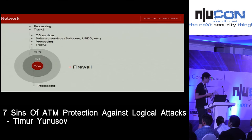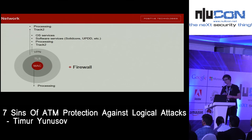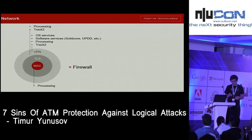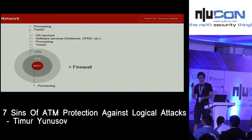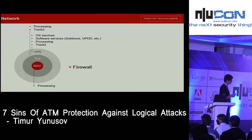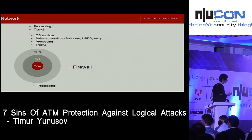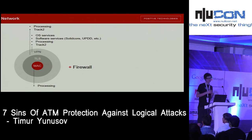About the network: there are many protection mechanisms for ATM communication. First, of course, is VPN — software or hardware — which protects your OS services, incoming and outgoing requests, other software services, processing interaction, and customer track 2 data. Next is TLS — application-level encryption — which protects processing interaction from spoofing and protects track 2 data. Finally, there are message authentication codes, which only protect processing interaction from spoofing but do not protect your track 2 data, which could still be stolen.